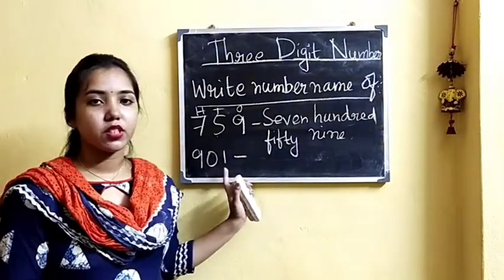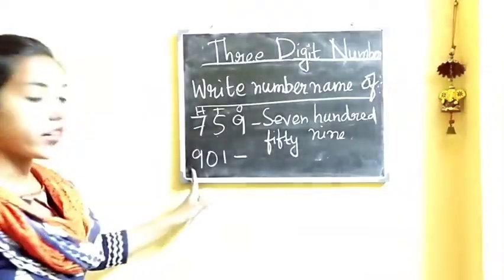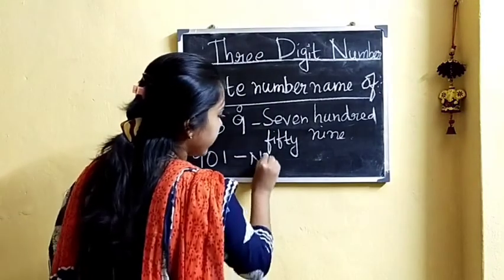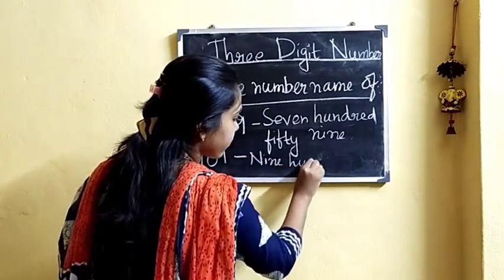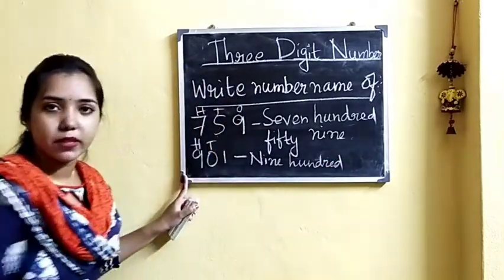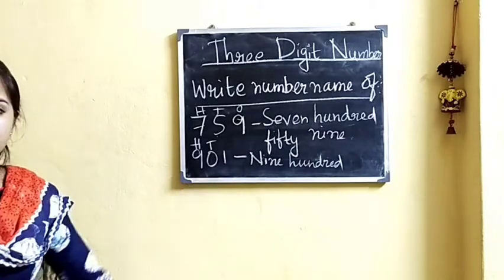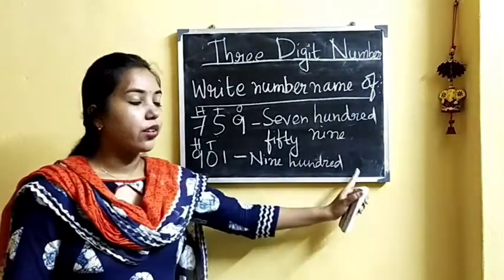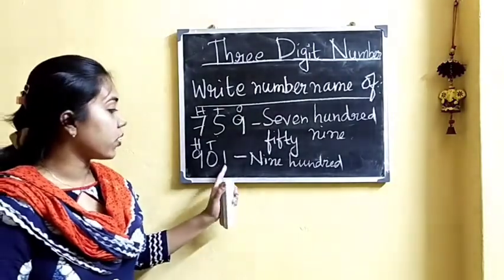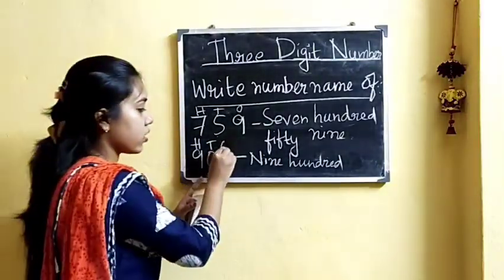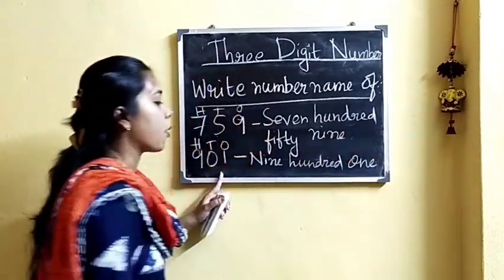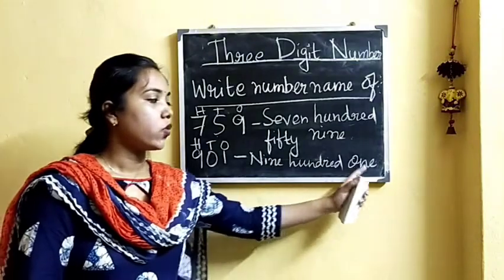Now let us write the number name of another number. Here 9 is at the 100s place, so we will write 900. Next, 0 is at the 10s place — 0 tens means 0, but we cannot write 0 in the number name, so we move to the 1s place. Here 1 is at the 1s place, so we will write 1. So the number name becomes 901.